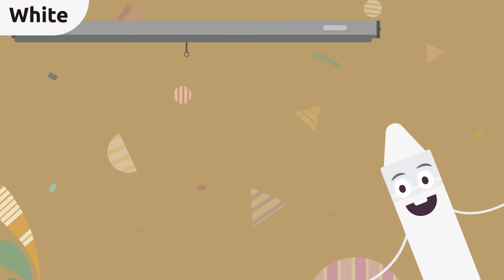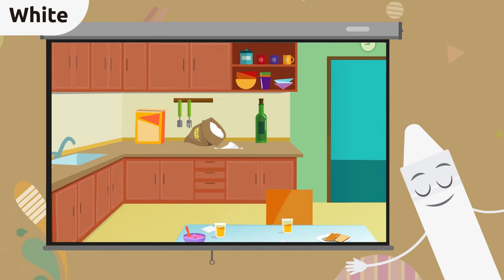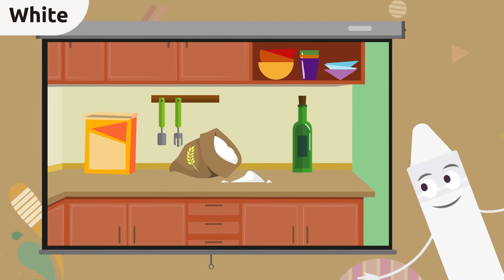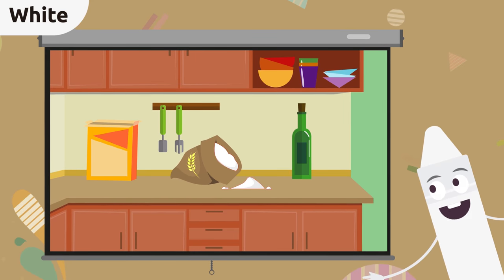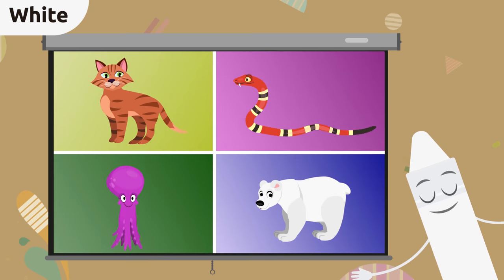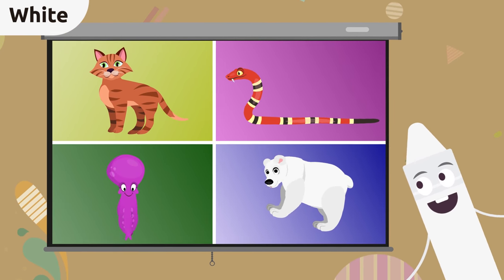Now let's spot the things that are white. There are so many things in this kitchen. There's something white, can you see it? The flower. The flower is white, that's right.